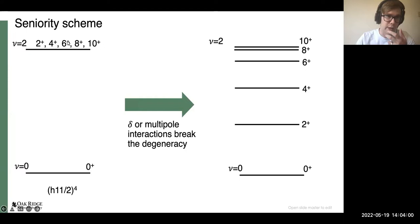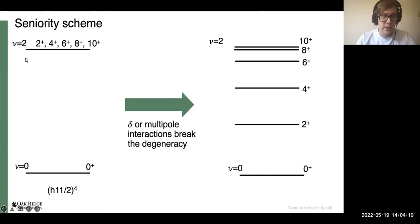It looks something like this on the left, where ν is the number representing the number of broken nucleons. When all nucleons are paired you have a zero-plus ground state, and if you take one of those pairs and break them up, you get this quintuplet of states corresponding to all the allowed spin couplings between that pair of nucleons. For example, if they are in the h11/2 orbital, that looks like 2+, 4+, 6+, 8+, and 10+.